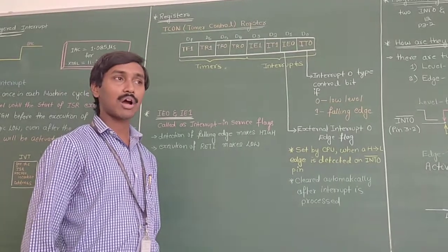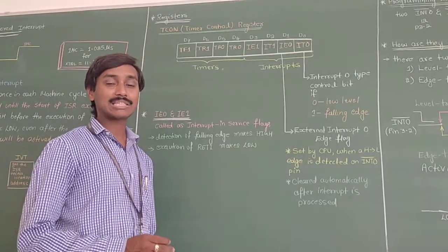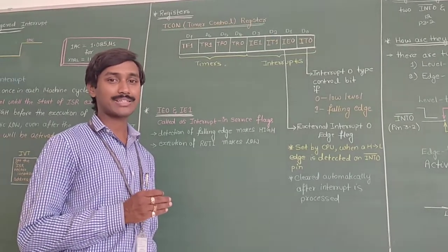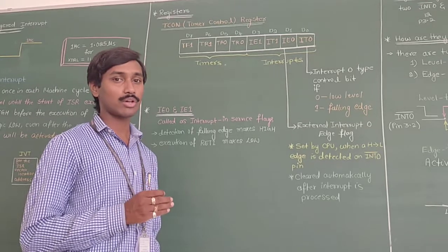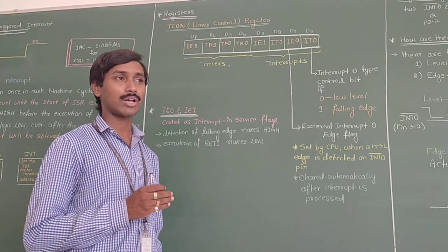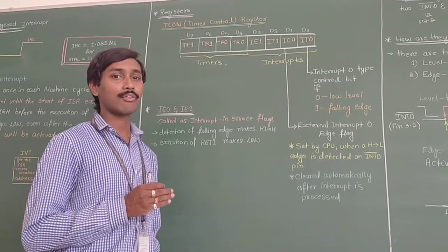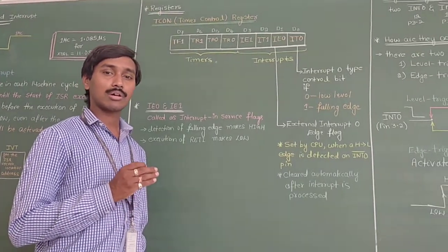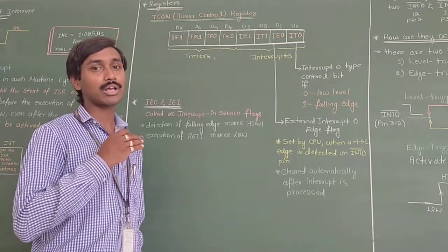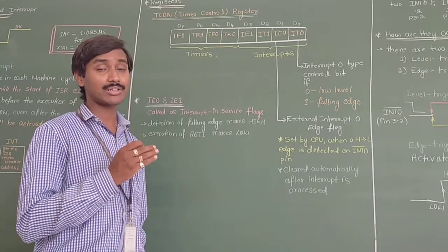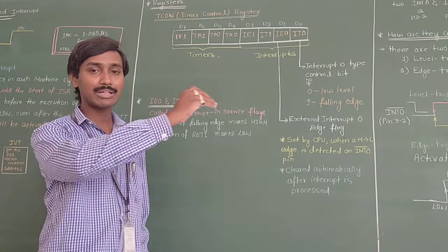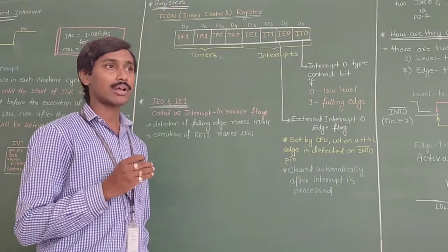In the last part of the video we discussed how to activate the external hardware interrupts. There are two types: low level activation and falling edge activation. These are called level triggered interrupt or edge triggered interrupt. Level triggered interrupt triggers on a low level signal, while edge triggered interrupt checks for a high to low transition — that is, whenever there is a falling edge detection, it generates an interrupt.